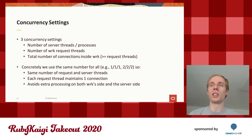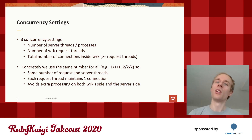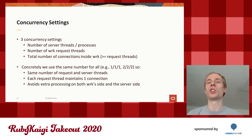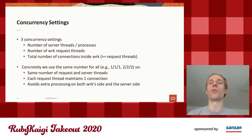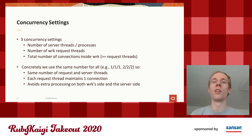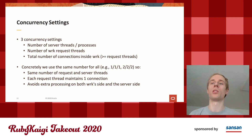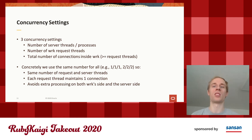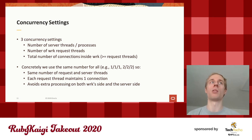We have three concurrency settings to tweak: the number of server threads (or processes on CRuby), the number of WRK request threads, and the number of connections inside WRK. To keep it simple, we use the same number for all, meaning the number of request threads and server threads match each other. Each request thread maintains one connection, so it's very simple on the WRK side. The goal is to avoid extra processing on both the WRK side and the server side, really focusing on how fast we can process one request.